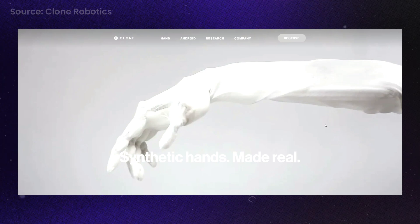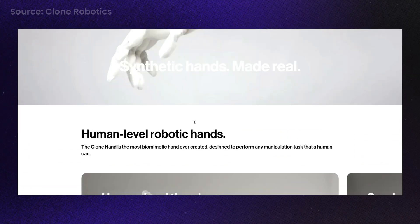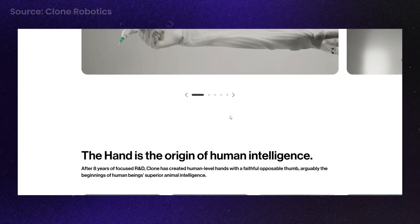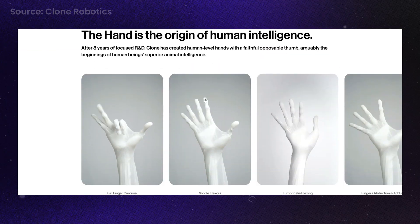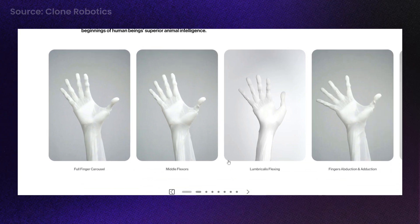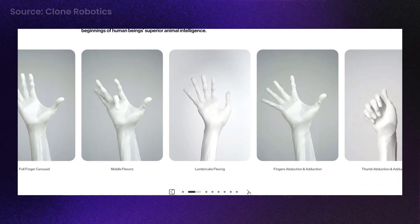But first, let's talk a bit more about the Clone hand. Now the hand, like the rest of the torso, contains artificial bones, ligaments, and muscles, which offer all 27 degrees of freedom of the human hand, resulting in these incredibly lifelike movements.